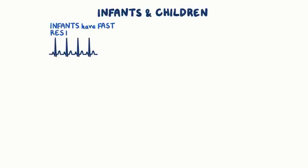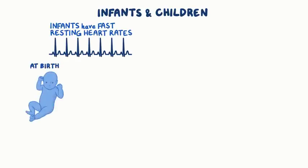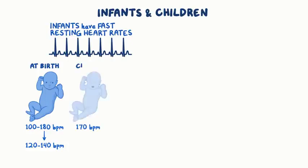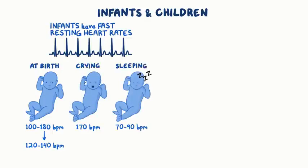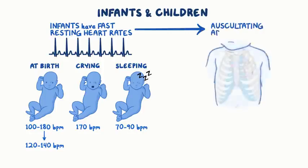Infants have fast resting heart rates. Right at birth, resting heart rate is between 100 and 180 beats per minute. After a few days, the heart rate should decrease to 120 to 140 beats per minute. Heart rates will vary quite a bit between moods — it might go up to 170 if the infant is crying, or dip down to between 70 and 90 if it's sleeping. Because of the fast heart rate, the easiest way to measure heart rate in infants is by auscultating the apical pulse.